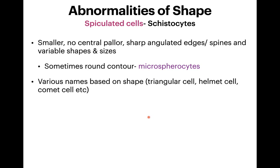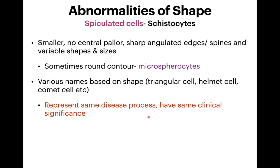Various names have been given to these shapes — triangular cell, helmet cell, comet cell — but there is no need to describe them as separate kinds of cells. Just call them schistocytes, because they represent the same clinical process and have the same clinical significance. Describing them separately only increases the length of your peripheral blood film report and may confuse the clinician.